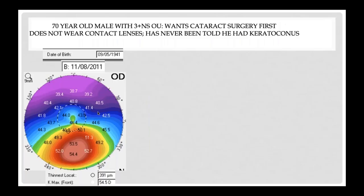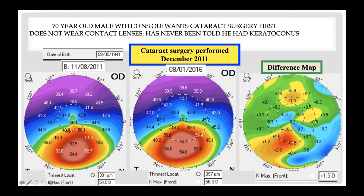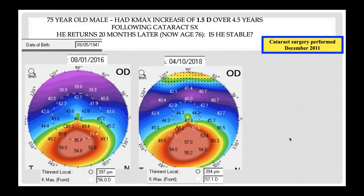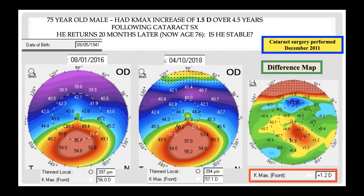Here's another 70-year-old patient, born in 1941, who came to see me in 2011. They had cataract surgery in December 2011 and came back in 2016, where their K-Max went from 54.5 to 56 — the difference map shows inferior steepening. The patient wasn't ready for a procedure. When they came back again in 2018, the K-Max worsened further from 56 to 57.1, with the difference map showing additional steepening. This patient, born in 1941, in their mid-70s, was still progressing.